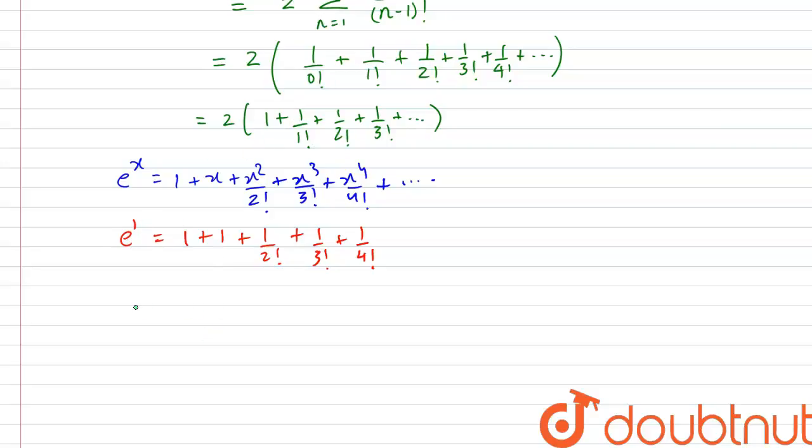So our given summation, that was n equals 1 to infinity of 2n by n factorial, this is equal to 2 into just e. And this is our final answer.